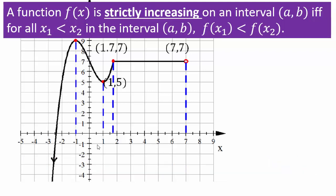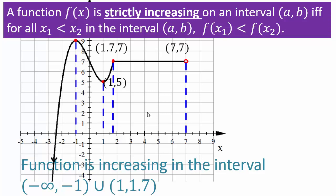Similarly, strictly increasing means that for x1 smaller than x2 on the interval (a, b), the y-coordinate at x1 is smaller than the y-coordinate at x2. For example, at x equals negative 2, the y-coordinate is about 5, and at x equals negative 1.5, it's about 8 — so at negative 2, it's a smaller y-coordinate than at negative 1.5. The function is increasing on the interval negative infinity to negative 1, and also from x equals 1 to x equals 1.7 — two separate intervals.